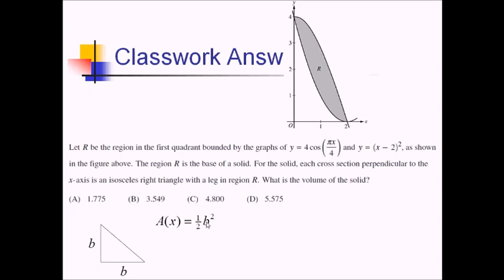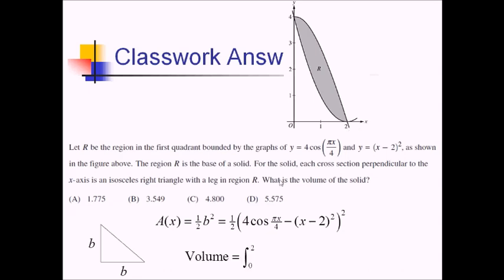Expressing that in terms of x, the base is just the distance between the two functions. Cosine is the top one, so I've got 1 half times a big parentheses with the first function minus the second function, all squared. Now let me put that on the calculator — the integral from 0 to 2 of this A of x formula with a dx next to it.